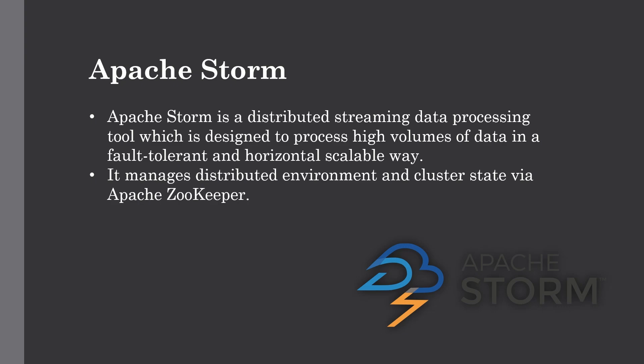Apache Storm is another streaming data processing tool which processes big data in real time. It is designed to process data in a very fault tolerant and horizontally scalable way. Fault tolerance and horizontal scalability are a must for big data, because your system should be able to add more worker nodes to process such huge volumes of data. All these tools we have discussed are suitable for big data and provide horizontal scalability. Storm manages its distributed environment via Apache ZooKeeper.